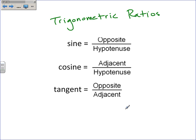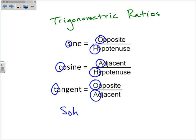A way of remembering these, since they're important, is by taking the first letters to spell a funny word: SOH-CAH-TOA. The sine is the opposite over the hypotenuse. The cosine is the adjacent over the hypotenuse. And the tangent is the opposite over the adjacent. SOH-CAH-TOA.